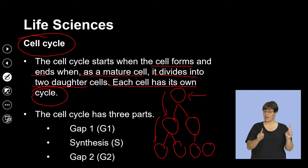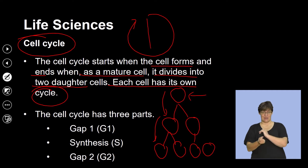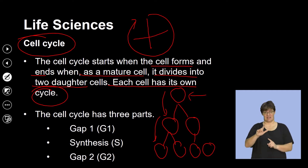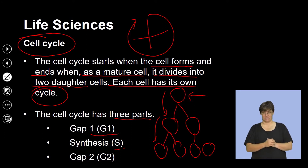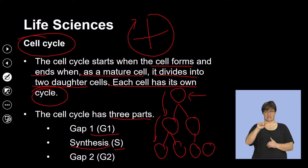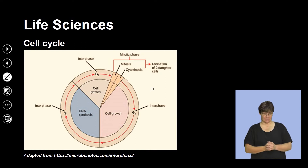Each of these cells undergoes a specific cycle of events — that's essentially what we refer to as the cell cycle. The cell cycle has three parts: the G1, or Gap 1 phase; the S phase, or synthesis phase; and then the G2, or Gap 2 phase.